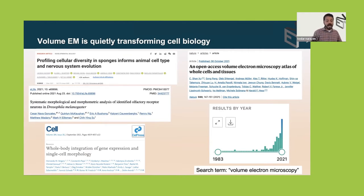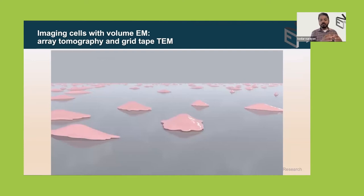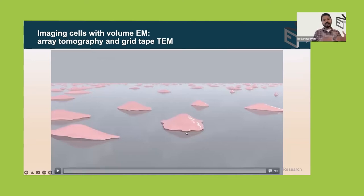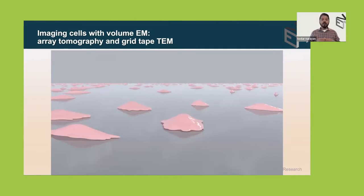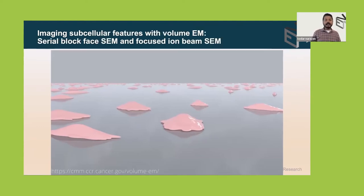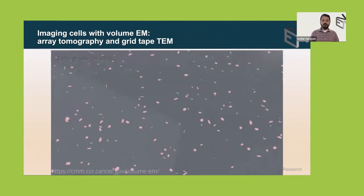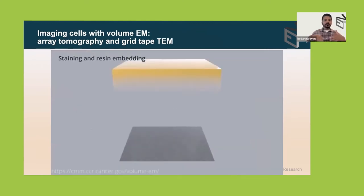We are in the midst of an inflection point in terms of publications, with a lot of interest coming in as we find out what volume EM can do for cell biology discovery. I'll now quickly go over a couple of movies to describe a few popular volume EM approaches. For example, if you want to image an entire field of adherent cells — these are the gummy-looking things growing in vitro — you do your regular heavy metal stain, fixation, resin embedding.